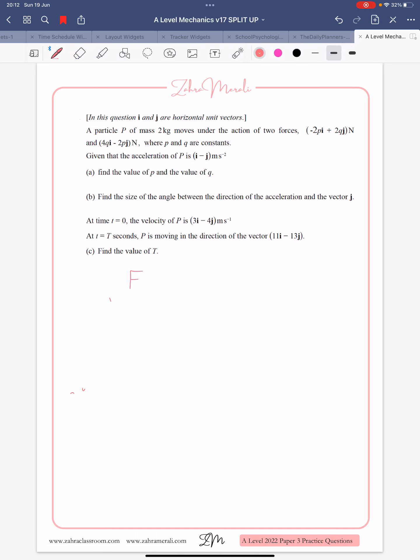Right, so for this question, we're going to be using F equals MA. Our F is made up of two forces. I'm going to be putting them in column vectors because I think it's easier to see for this question, but you don't have to. And M, it tells us, is 2, and we've got an acceleration of 1 minus 1.